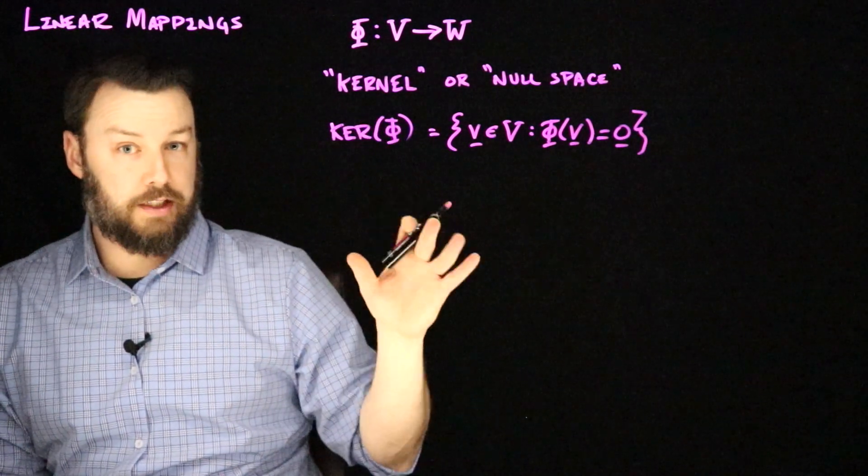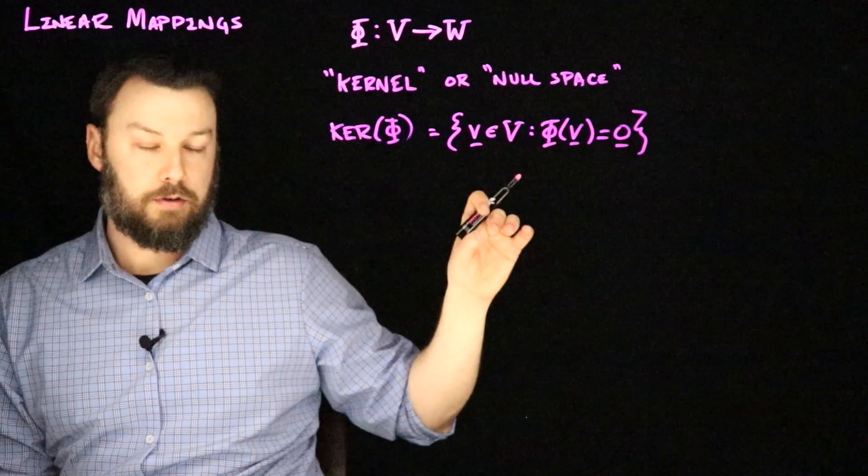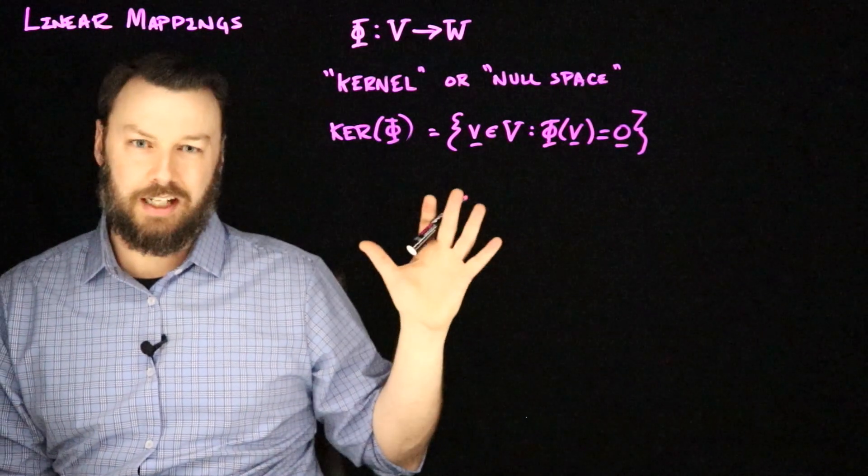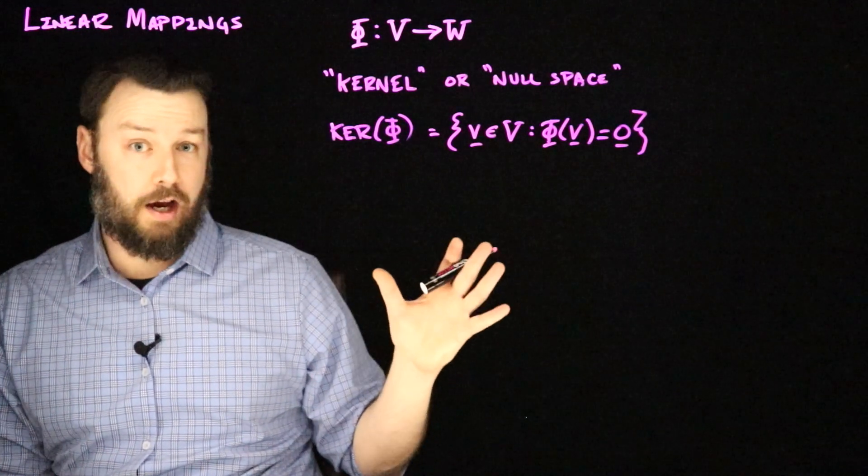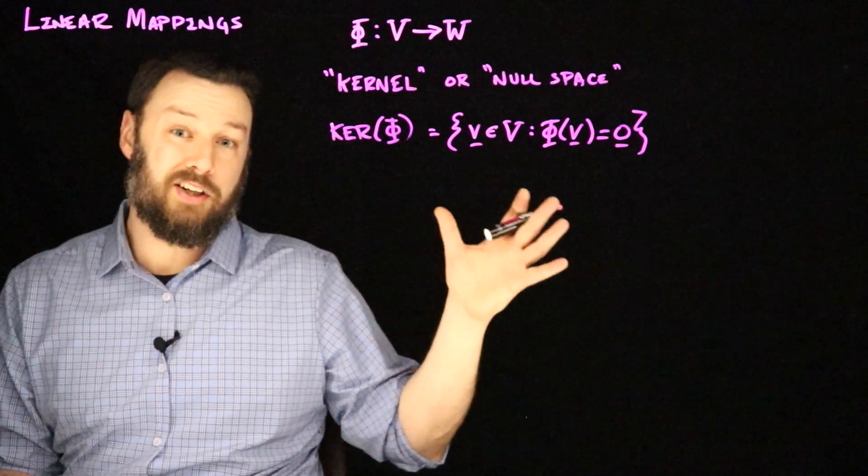So these are the special vectors in V that when you go through Phi, they just become zero. So you can kind of think of these as the vectors that kind of get removed by applying Phi. That's why they're called the null space is because they're the ones that become null when you apply Phi.